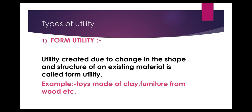We are moving with types of utility. The first type is form utility. Utility created due to change in the shape and structure of an existing material is called form utility. Example: toys made of clay, furniture from wood, etc.